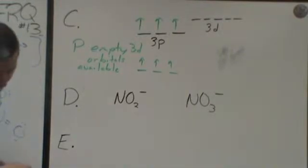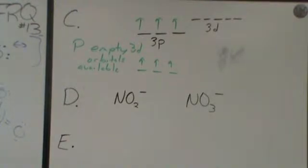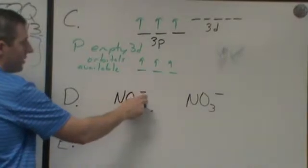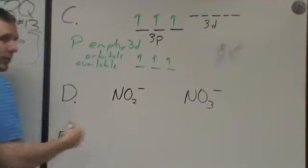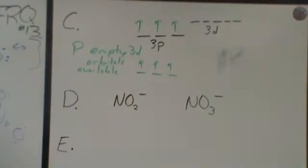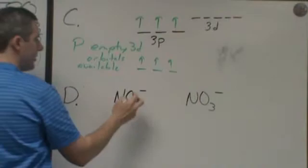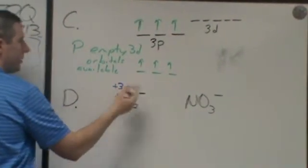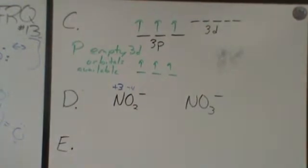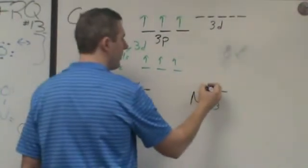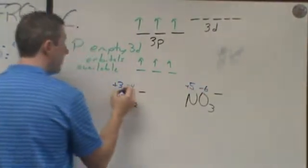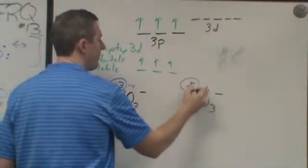Part D asks for the oxidation number of nitrogen in each compound. One approach: oxidation numbers must add up to minus one, and oxygen is always minus two. For nitrite (NO₂⁻): two oxygens give minus four, so nitrogen must be plus three. For nitrate (NO₃⁻): three oxygens give minus six, so nitrogen must be plus five. The answers are plus three and plus five.